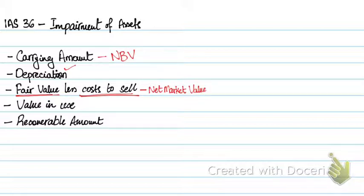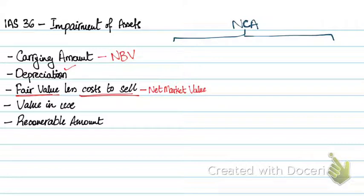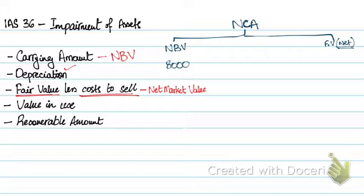To explain the last two terminologies — value in use and recoverable amount — we'll go over a small example to understand what this standard is all about. Let's say you have a non-current asset and the net book value of the asset is $8,000. And let's say the net market value, or net fair value, is also $8,000 — so that is the amount you'll get after paying all the costs to sell and selling your asset.